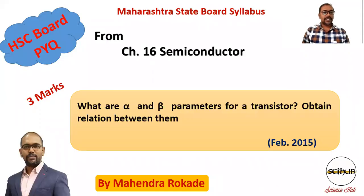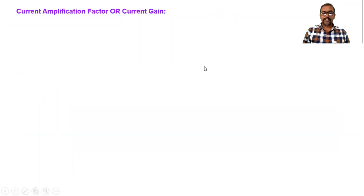A question from Chapter 16, Semiconductors: What are the alpha and beta parameters for a transistor? Obtain the relation between them. Alpha and beta are current amplification factors, also called current gain factors.